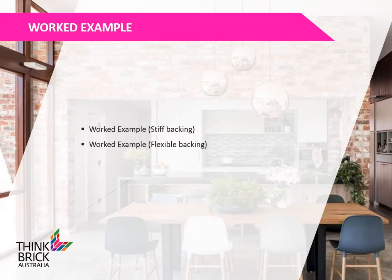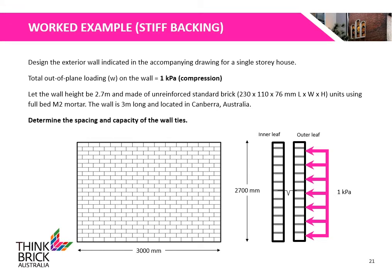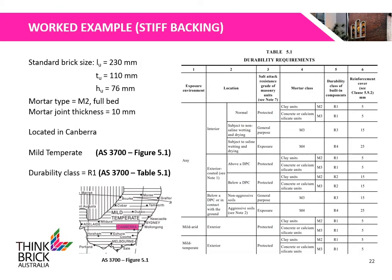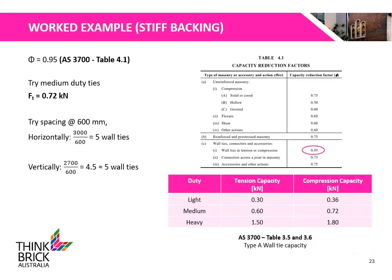We will now go through a worked example for a stiff and flexible backing. This example requires us to design an exterior wall with a stiff backing. A total out-of-plane loading of 1 kPa in compression is acting on the wall. The wall is 2.7m high using full bedding of M2 mortar, 3m long, and is located in Canberra. Located in Canberra, the exposure environment is classified as mild temperate as shown in Figure 5.1 of AS3700, and as highlighted, R1 wall ties shall be used. The capacity reduction factor is assumed to be 0.95 from Table 4.1 of AS3700. As the ties will experience a compressive force, we will trial medium duty ties, which have a compressive strength of 0.72 kN.